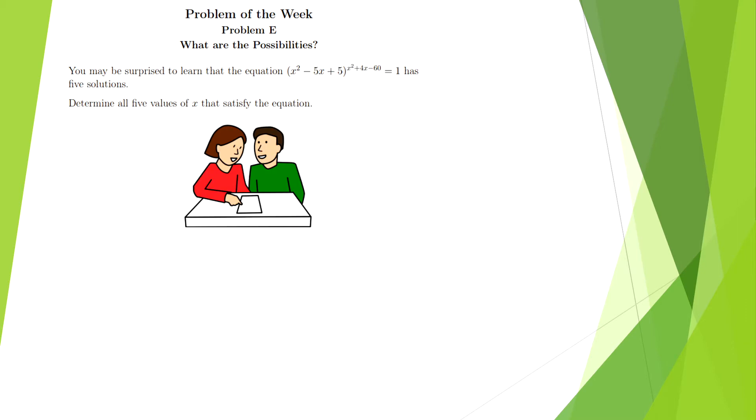For this week, the problem of the week is called What are the Possibilities? I was really intrigued by this problem because this type of problem you can solve with grade 9 and 10 math knowledge, but it's actually a grade 11 and 12 designated problem on the Waterloo website. It's just a problem with a few tricks and a few cases. I found it really interesting.